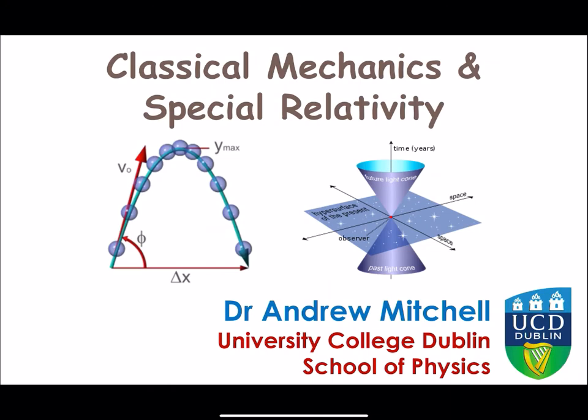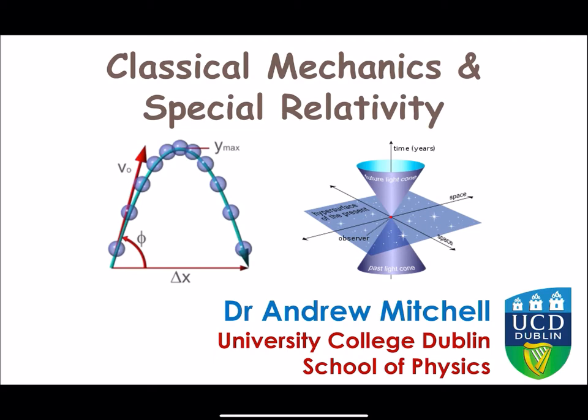I'd like to give a short introduction and synopsis to this course — the structure of the course and the kinds of things we're going to be talking about. The course will consider two related topics: classical mechanics and special relativity. We'll do classical mechanics in the first half and special relativity in the second half. However, there will be many connections between the two, and when talking about special relativity we'll use a lot of the machinery and framework set out in the first part.